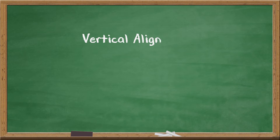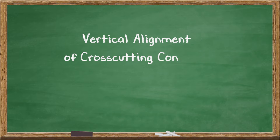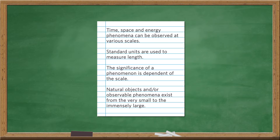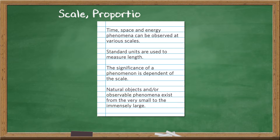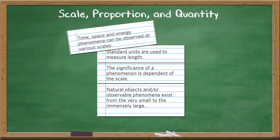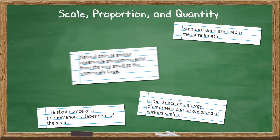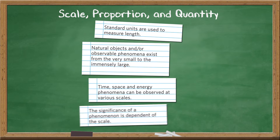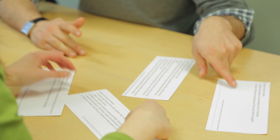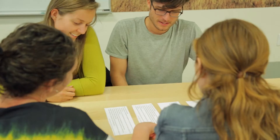In the first activity, participants will do what we call a vertical alignment of two CCCs. Basically, each group will receive the NGSS descriptions of what the CCC looks like at each grade band, which are cut into strips and randomized. What they don't know, however, is which strip correlates to which grade band. Their task is to organize the descriptions into a logical sequence that represents the deepening of that cross-cutting concept from kindergarten to high school.